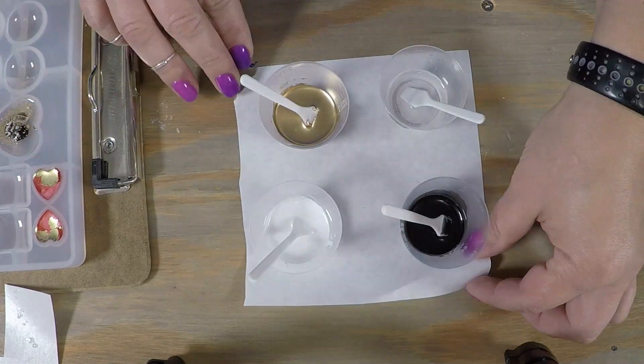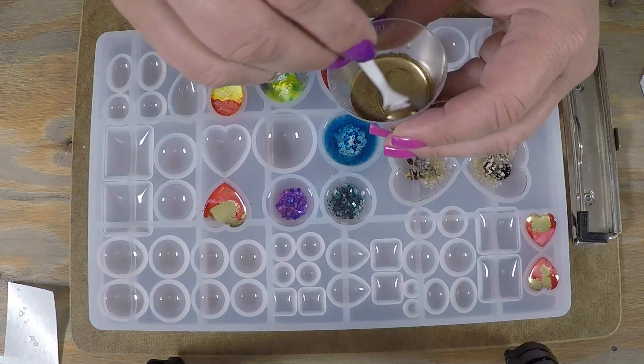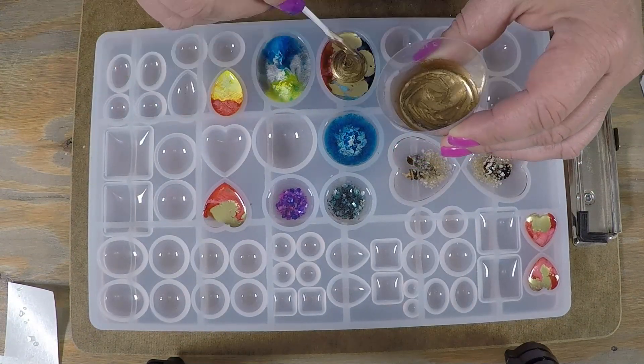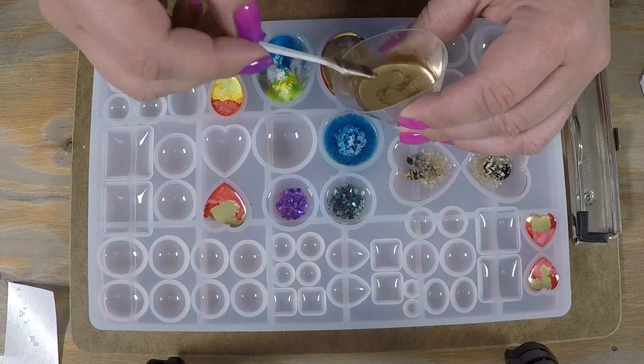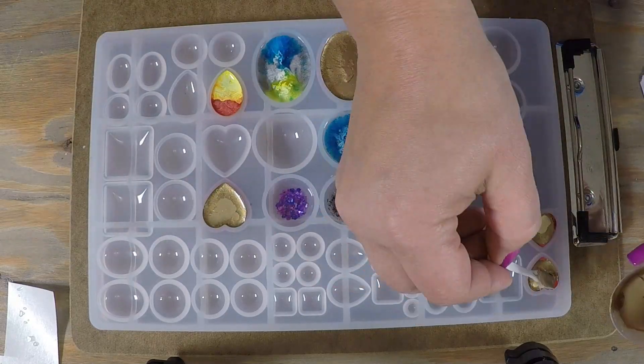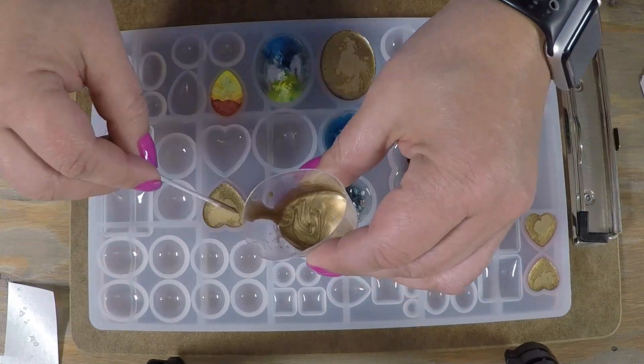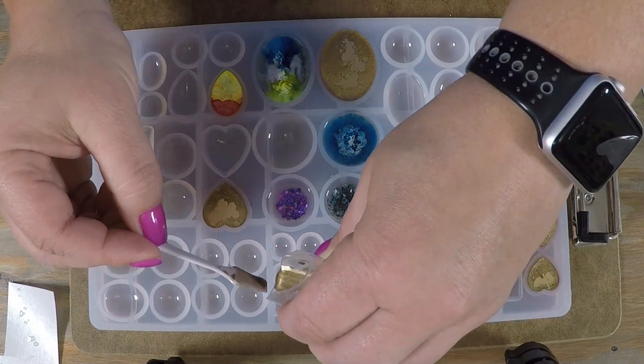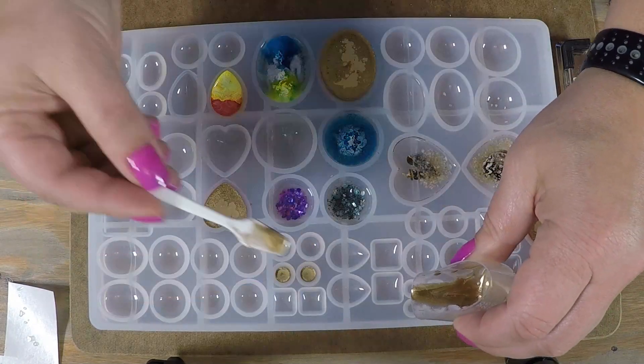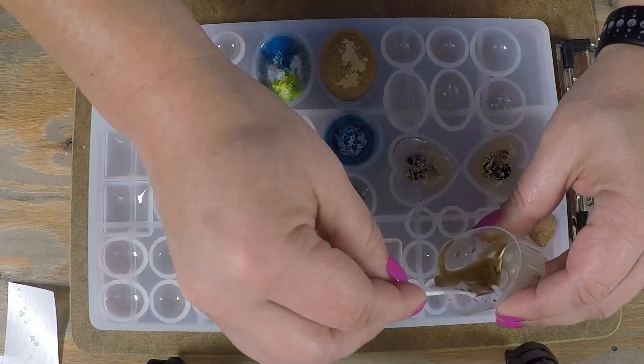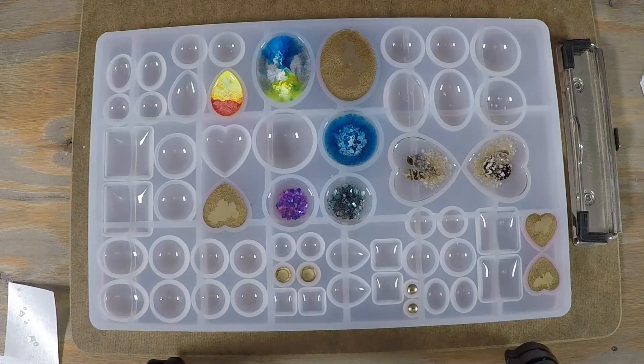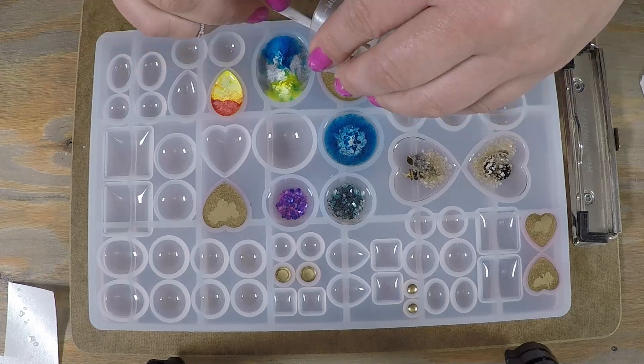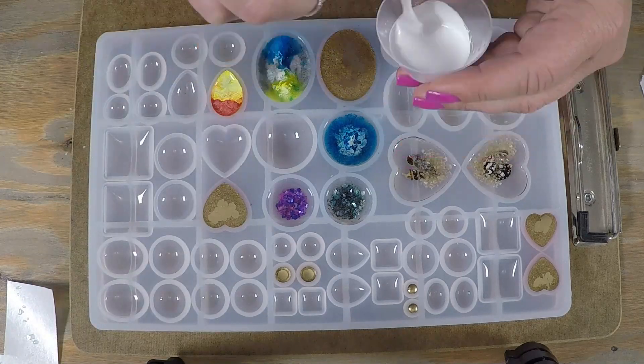It's a little hard to squeeze it out of these bottles. I actually cut the tip of the white off to help it come out. I'm just going to add some gold to the back of some of these here, using that spatula to make sure I don't overfill the mold.